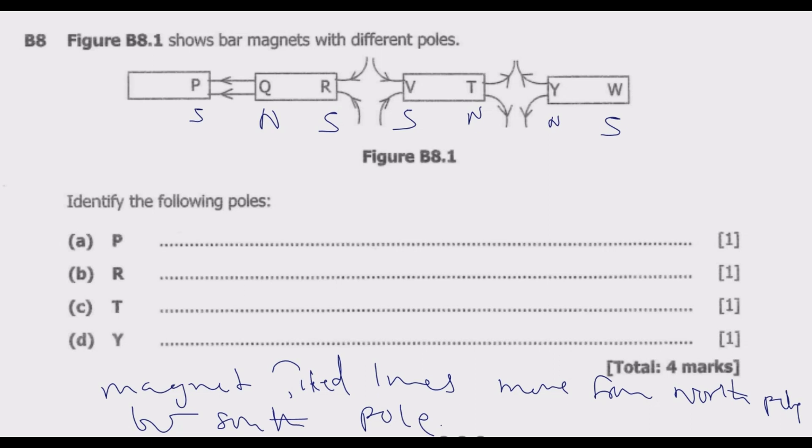Now what is P? P is south pole. Then what is R? R is again south pole. Then what is T? T is north pole. Then Y? Y is also north pole.